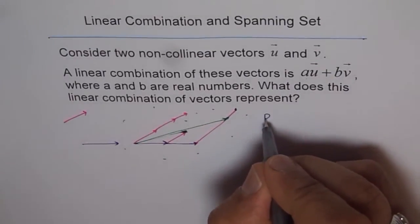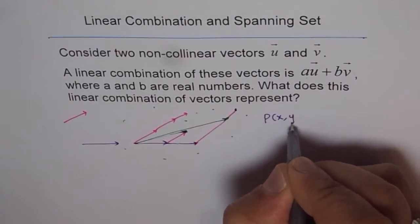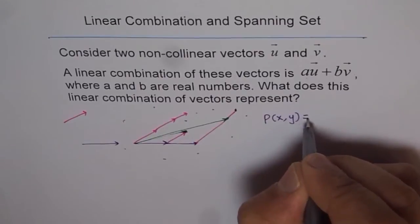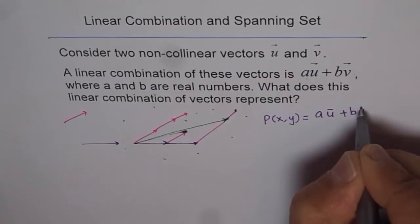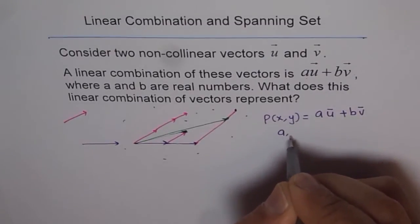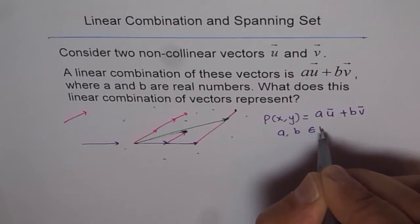So what I am trying to say here is that any point p, which is x, y, can be written as a linear combination of au plus bv, where a and b belong to real numbers.